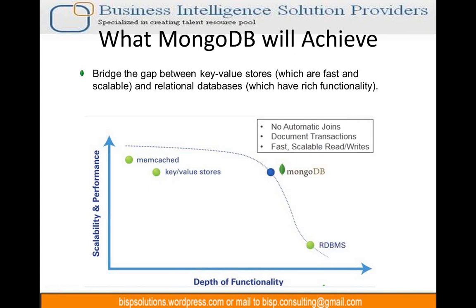No joins are available in MongoDB, but we can do document transactions. Everything is stored in documents and we can embed documents within documents. For example, a record for Nameth can have another document embedded within it. And MongoDB offers fast scalable read-write because it is distributed and scalable across the system.